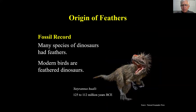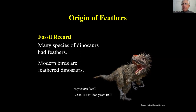The fossil record shows that many species of dinosaurs had feathers, especially based on a lot of research out of China. Modern birds are in fact dinosaurs — we just happen to call them birds. The only animals that have ever had feathers are dinosaurs and modern birds. There are many reasons why you want feathers: to keep warm, to display for a mate, and all kinds of other reasons.